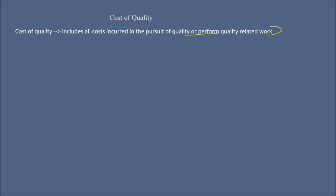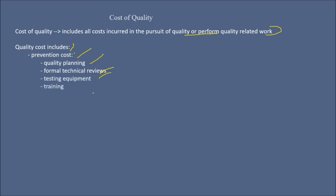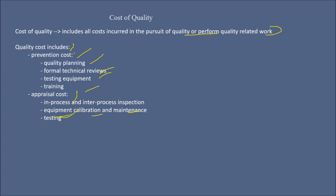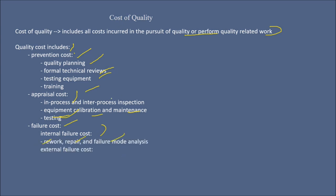The cost of quality includes all costs incurred in the pursuit of quality and performing quality-related work. Quality costs may include prevention costs like quality planning, formal technical reviews, testing equipment, and training; and appraisal costs such as in-process and inter-process inspection, calibration and maintenance of equipment, and testing of products. And then there are failure costs — internal failure costs such as reworking, repairing, and failure mode analysis; or external failure costs such as complaint resolution, product return and replacement, helpline support, and warranty work.